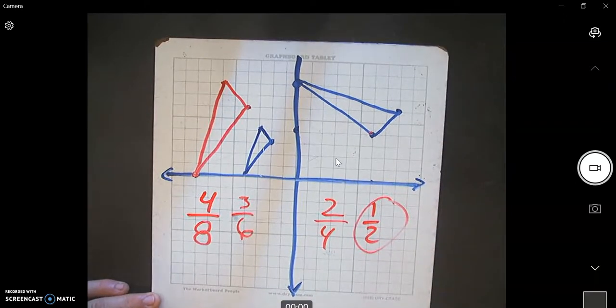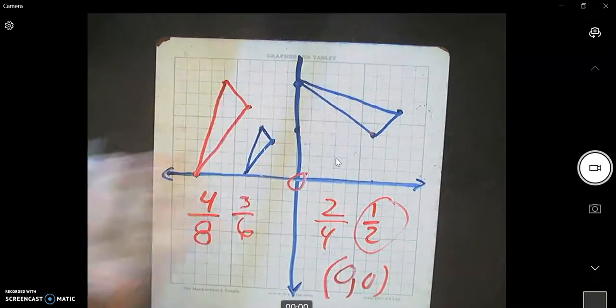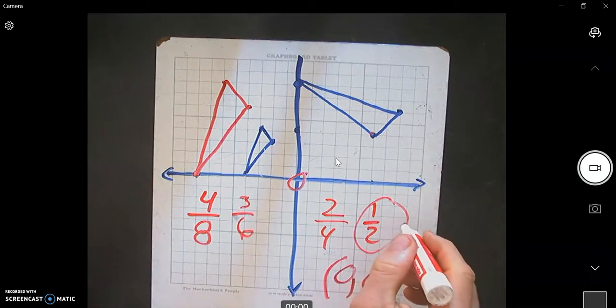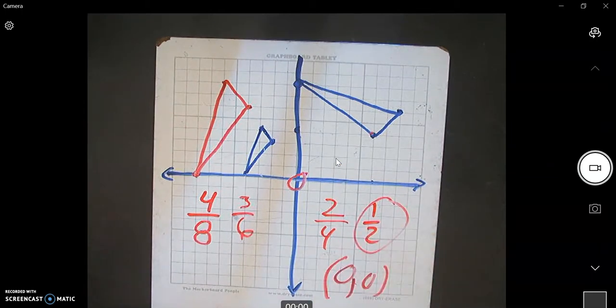And we have a center of dilation at 0, 0. So we rotate 90 degrees. And we have a center of dilation at 0, 0. And our scale factor is 1 half.